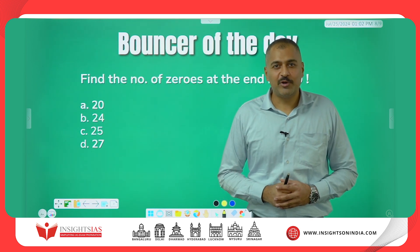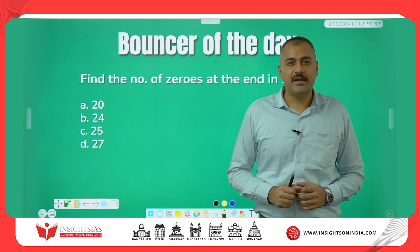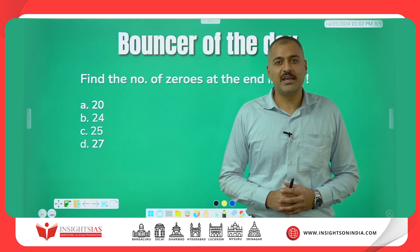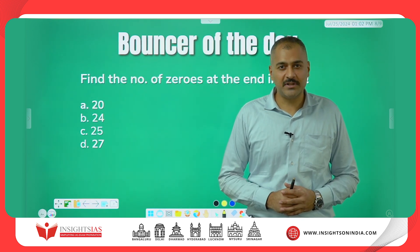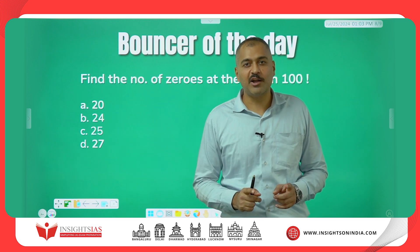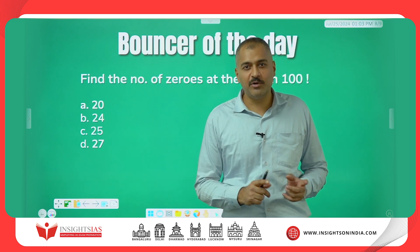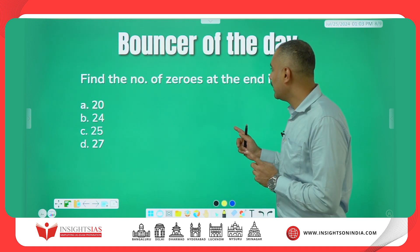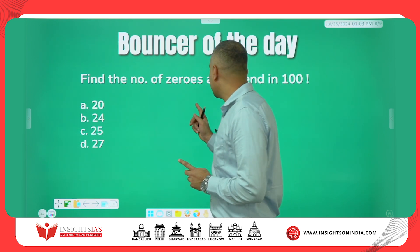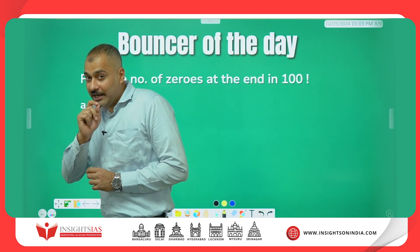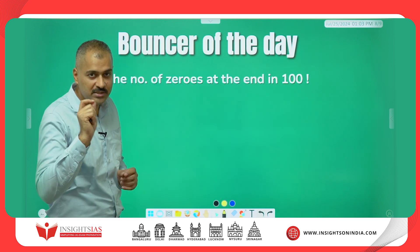Hello everyone, I am Shamanth Ghoda, CSAT faculty at Insights IAS. I welcome you once again for the question of the day series. This is the bouncer of the last video which I am going to explain. Find the number of zeros at the end in 100 factorial.